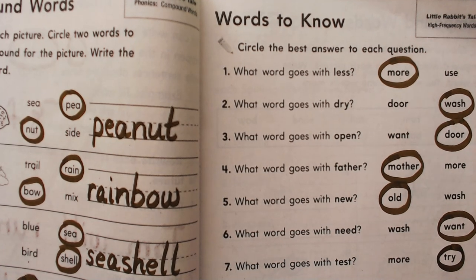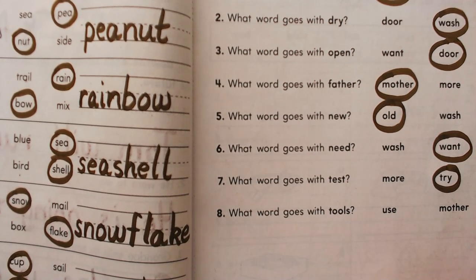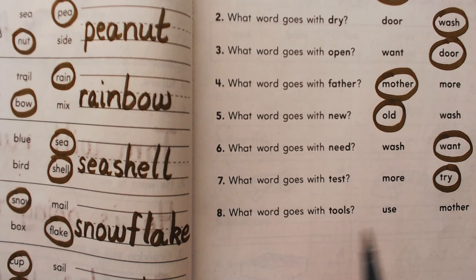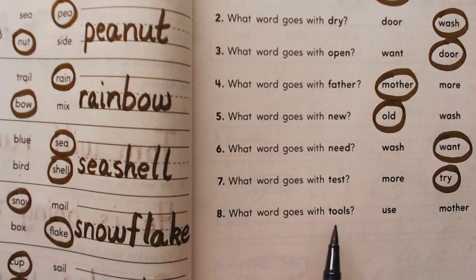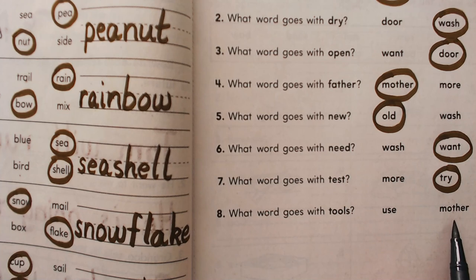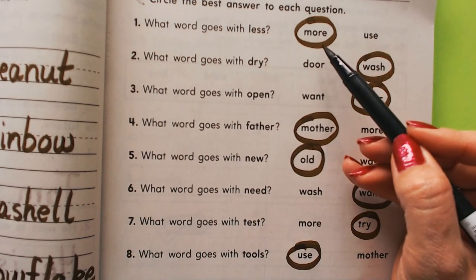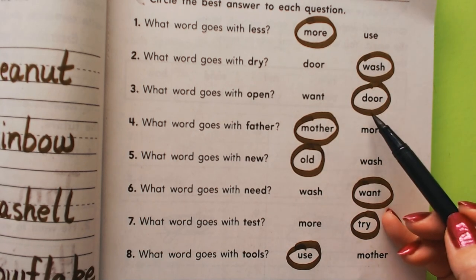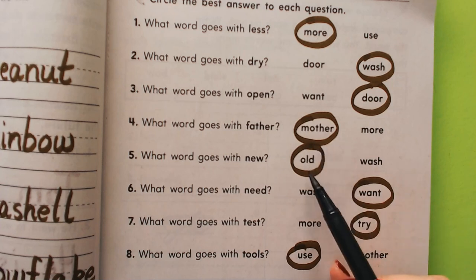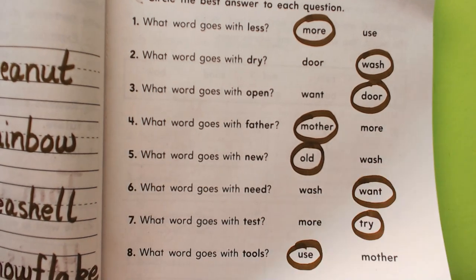There's an effort that goes with developing skills — you have to try. When you make that effort, you try. What word goes with tools? Use or mother? We use tools, so I think that's the word. Let's just read all those words one more time: more, wash, door, mother, old, want, try, use. Those are our eight words we have to know for our test on Friday.